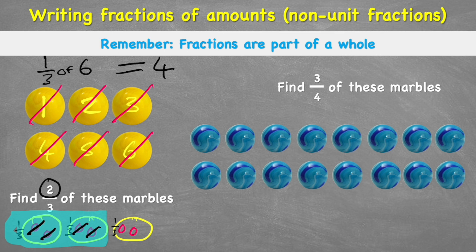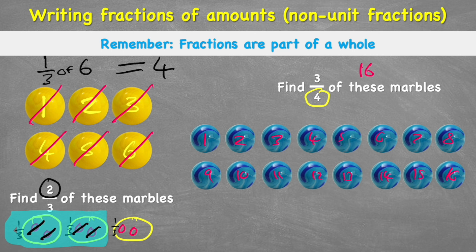Let's look at this second one: find three-quarters, or three-fourths, of these marbles. Let's count how many I have first — I have sixteen. So my question is: find three-quarters of sixteen. Remember what we need to do first — we need to look at our denominator: quarters or fourths. So I need four sharing circles: one, two, three, four.